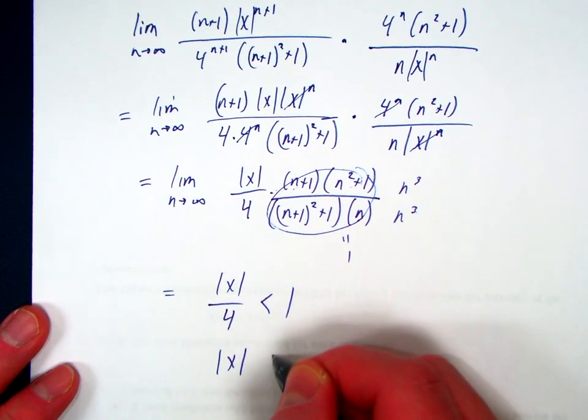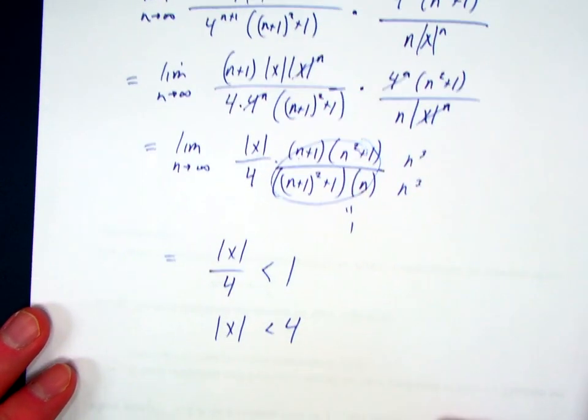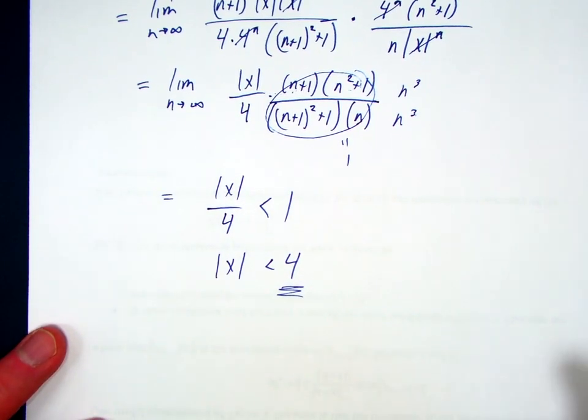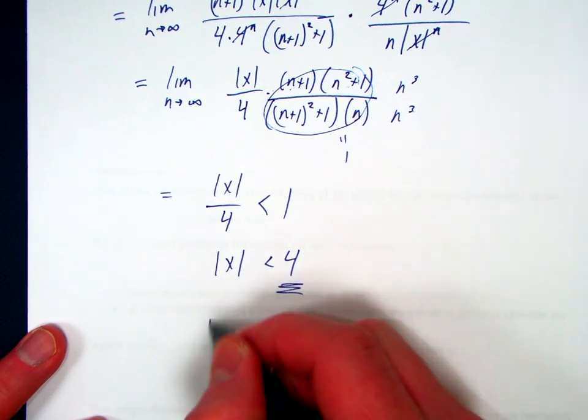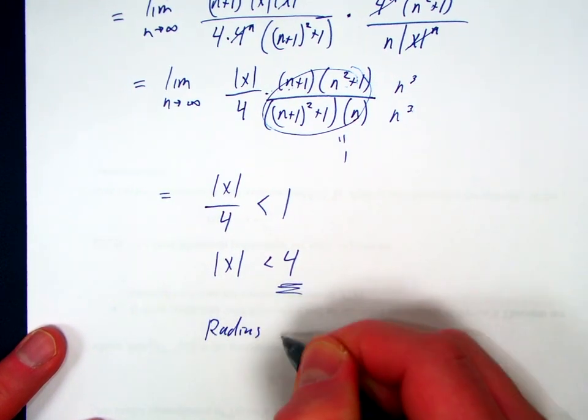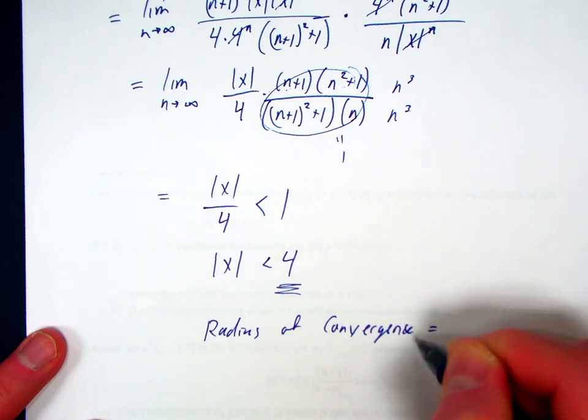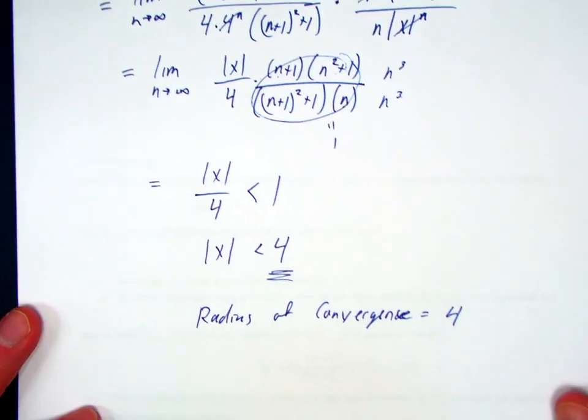Now we find 4, absolute value of x. We get absolute value of x is less than 4. So this is what I want. That is my radius of convergence. That's what I'm trying to find. The radius of convergence.